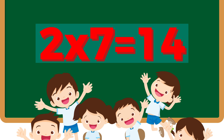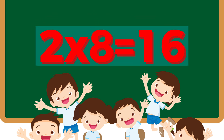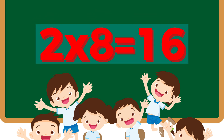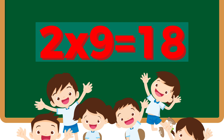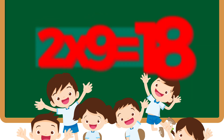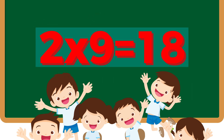Two sevens are fourteen, two eights are sixteen, two eights are sixteen. Two nines are eighteen, two nines are eighteen.